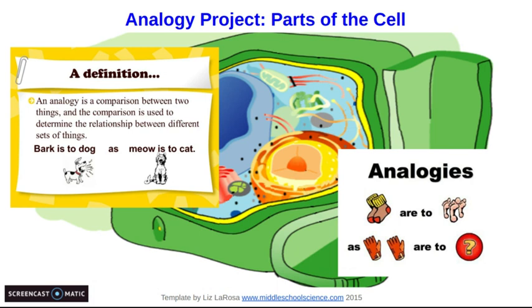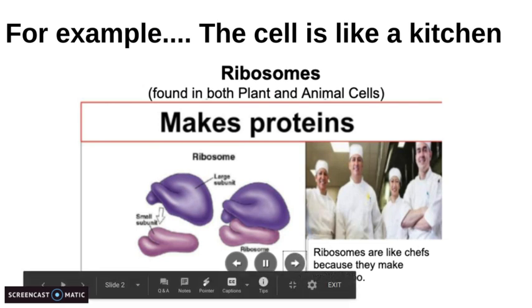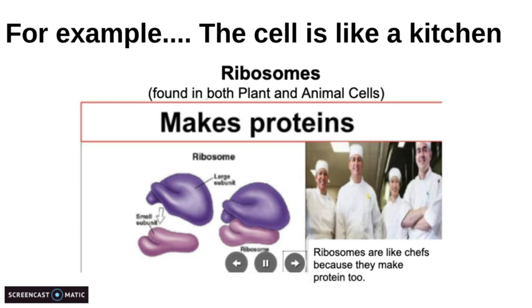So I want to show you one example just to get you started, and that is the cell is like a kitchen. So in this case, the kitchen is my overall analogy. I'm starting by saying the cell and a kitchen are similar, and I'm going to tell you why by comparing all of the organelles to the smaller parts of the kitchen. One example is the ribosomes. I know that the ribosomes' job is to make proteins, and I know that in a kitchen, the chefs are the ones who cook up the protein or make the protein. So I'm going to compare the ribosomes to the chefs.